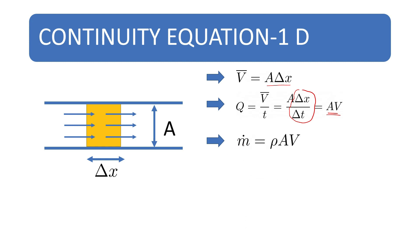The mass flowing through that region is ṁ, which equals rho into A into V, where rho is the density of the fluid. This can also be written as rho into Q.